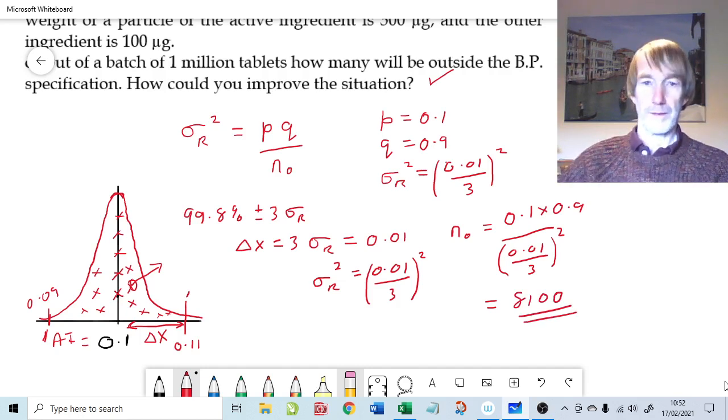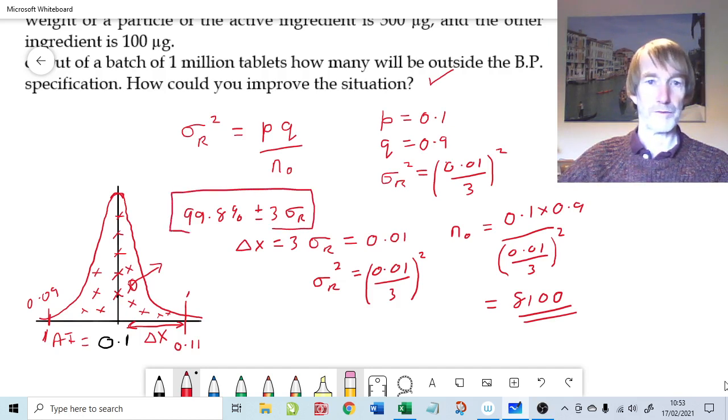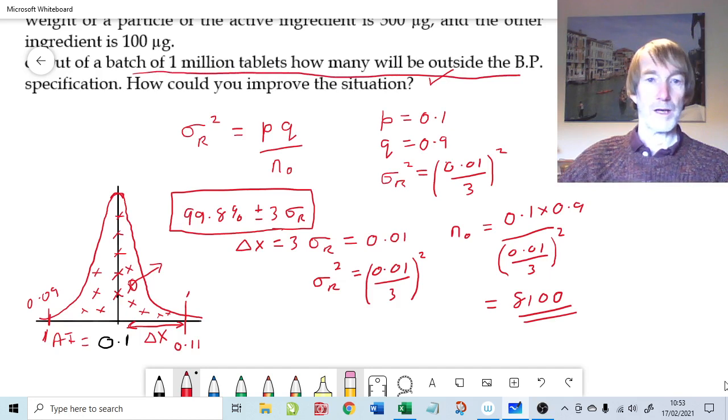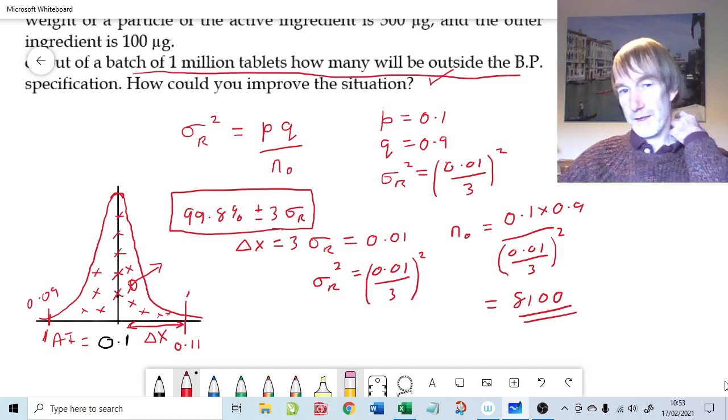But hold on a minute, is our choice of 3 times sigma r, is our choice of this particular level of confidence good enough for a pharmaceutical product? The question is asking out of a batch of one million tablets, how many will be outside the standard?